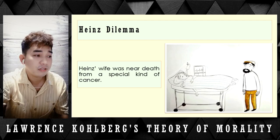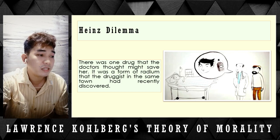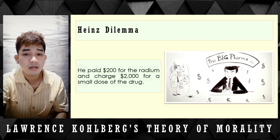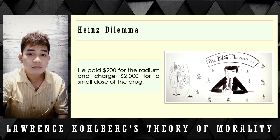The Heinz Dilemma: Heinz's wife was near death from a special kind of cancer. There was one drug that doctors thought may save her — a form of radium that a druggist in the same town had recently discovered. The drug was expensive, but the druggist was charging 10 times what it cost him to produce. The druggist paid only $200 for the radium, but charged customers $2,000 for a small dose of the drug.